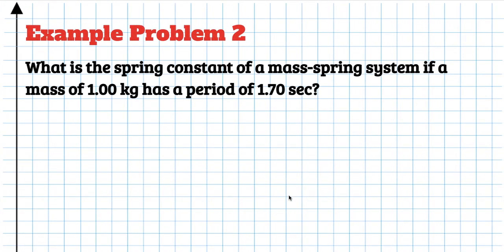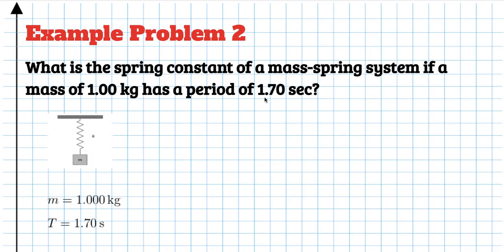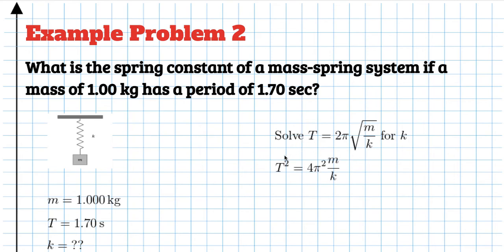The second example is slightly more complicated: what is the spring constant of a mass-spring system where the mass is 1 kilogram and the period is 1.7 seconds? You know the mass and the period and are trying to find k. To find the spring constant, you need to solve T = 2π√(m/k) for k. Here's a handy trick: when what you're solving for is inside a radical and in the denominator, square the entire equation.